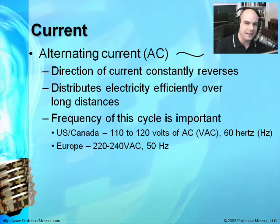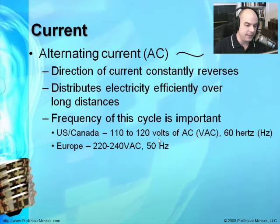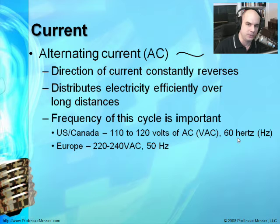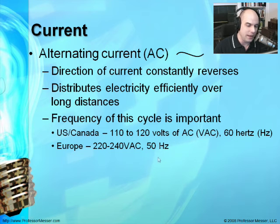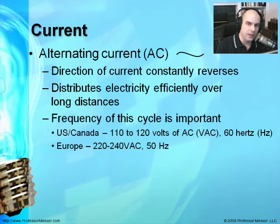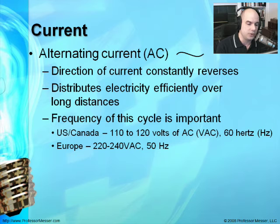The frequency of this AC cycle is very important. In the United States and Canada, we use 110 to 120 volts of AC at 60 hertz, or 60 cycles per second. If you go to Europe, it's a completely different voltage and a different cycle — 50 cycles per second. So when moving from the United States to Europe, your power supplies need to be compatible with both types, or you need a converter to use your electrical devices.